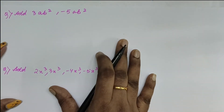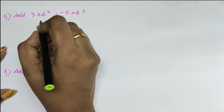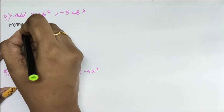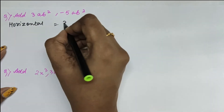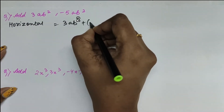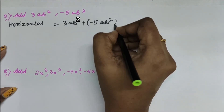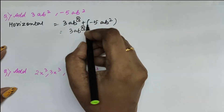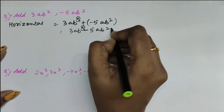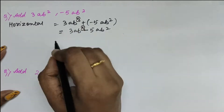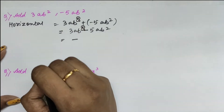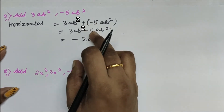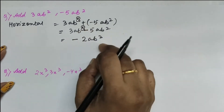So if the question is: add 3ab and minus 5ab, there are two methods of adding. One is the horizontal method where we simply write all terms with the plus sign and we solve it. Since plus and minus gives minus, the two terms are subtracted, so the symbol is going to be minus. The greater number is 5 and the symbol in front of it is minus, so our answer is minus 2ab squared.